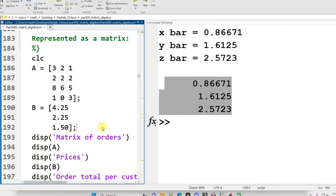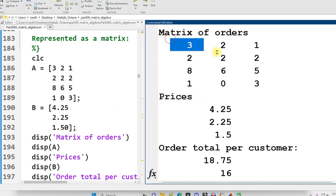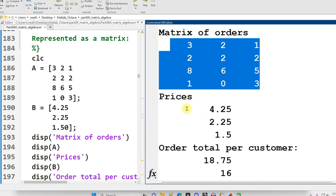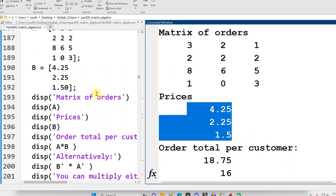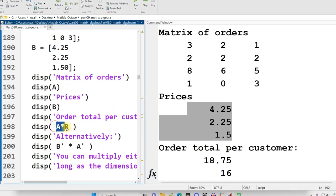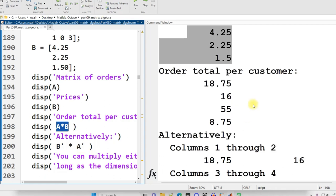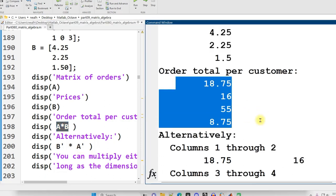Let me actually resize and run this screen. All right. So there's our matrix of customer orders. There's our vector of prices displayed out, and then I just do A times B, matrix multiplication A times B, and I get the total that each customer owes for their order.